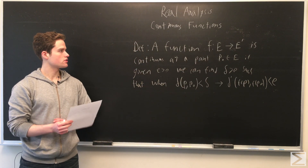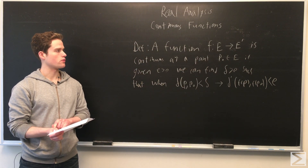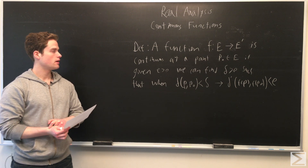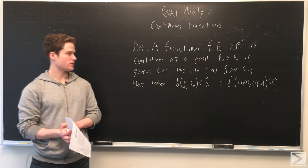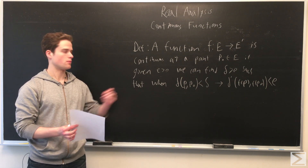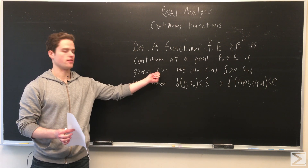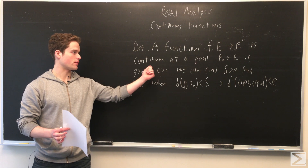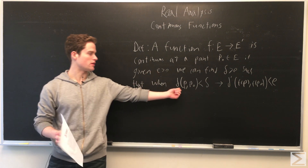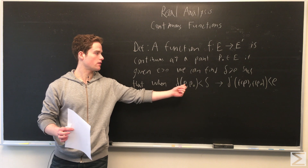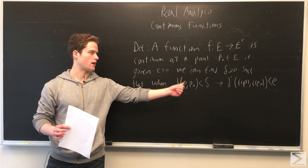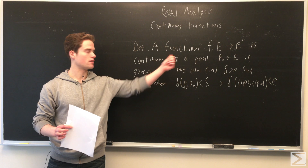We define a function going from one metric space E to another metric space E prime. We say it's continuous at point P-naught in E if, given some real number epsilon greater than zero, we can find a delta greater than zero such that when the distance between P and P-naught is less than delta, then we have the distance between F of P and F of P-naught less than epsilon in E prime.